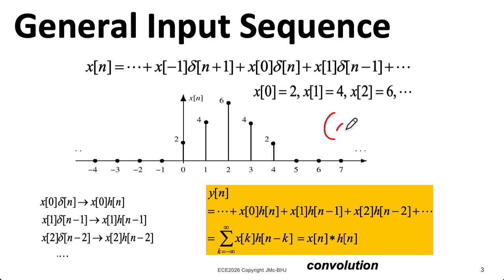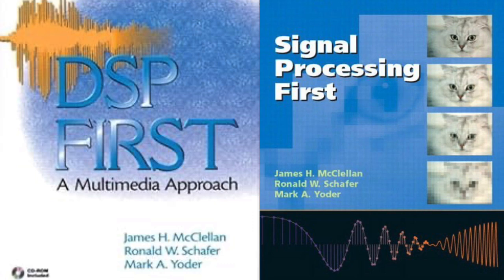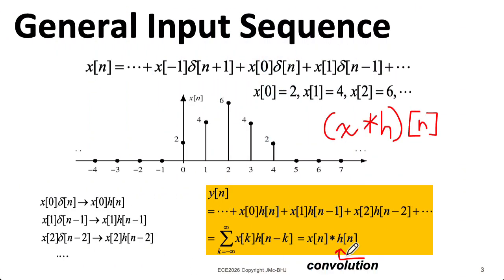A more elegant notation might be to do something like this. You could say x asterisk h, put parentheses around it to indicate that you're doing things to these entire sequences. Then once you get a sequence, you could say, oh, well, let's pick out the nth value in that sequence. But this notation does have some advantages, as you'll see later, and the DSP first and signal processing first textbooks by McClellan and Schaefer use it, so I'll stick with it.